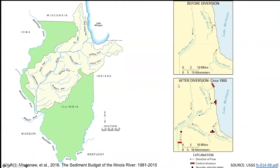About 50 years after that, another connection was made — even more important. The Chicago River's outflows to Lake Michigan were altered with control structures at both outflows as well as the Calumet. This effectively reversed the flow of the Chicago River, so waters no longer flowed to Lake Michigan but instead flowed down the Chicago Sanitary and Ship Canal and into the Mississippi River.